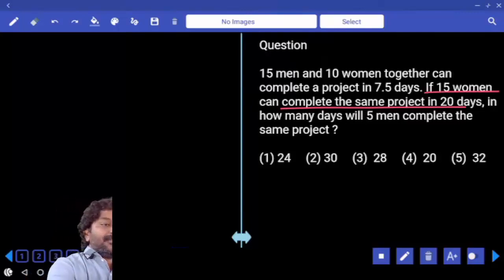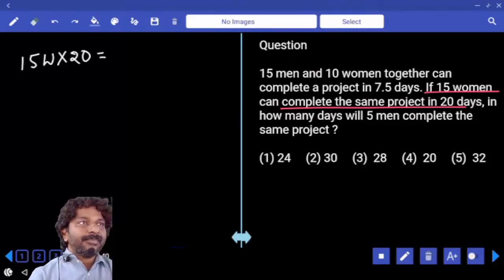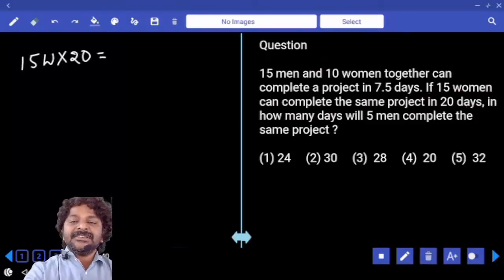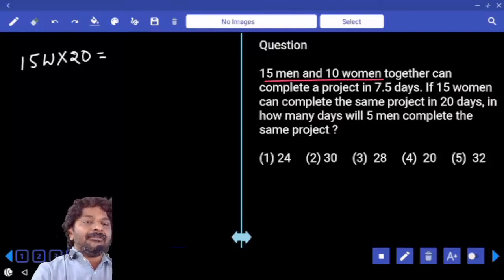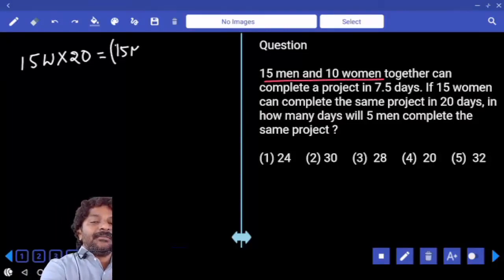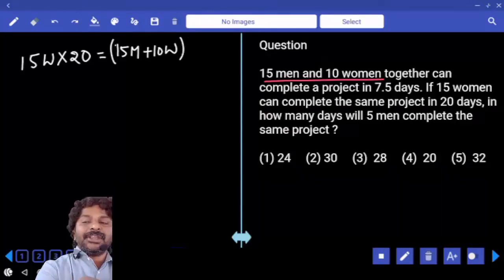The project in 20 days: M1 15 women, D1 20 days is equal to M2 D2. First case, 15 men and 10 women are there, so M2 is equal to 15 men plus 10 women, M2 D2.